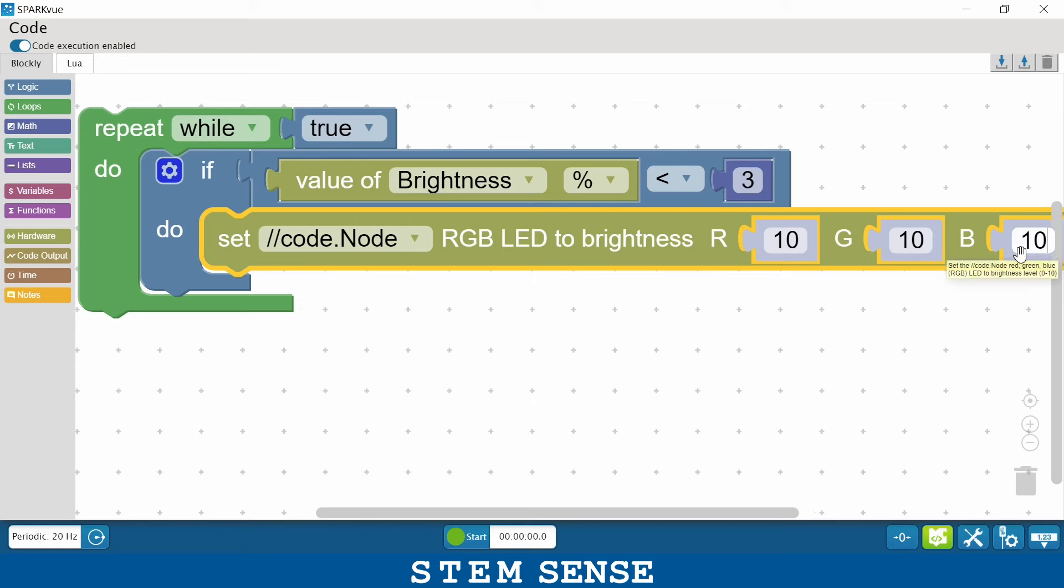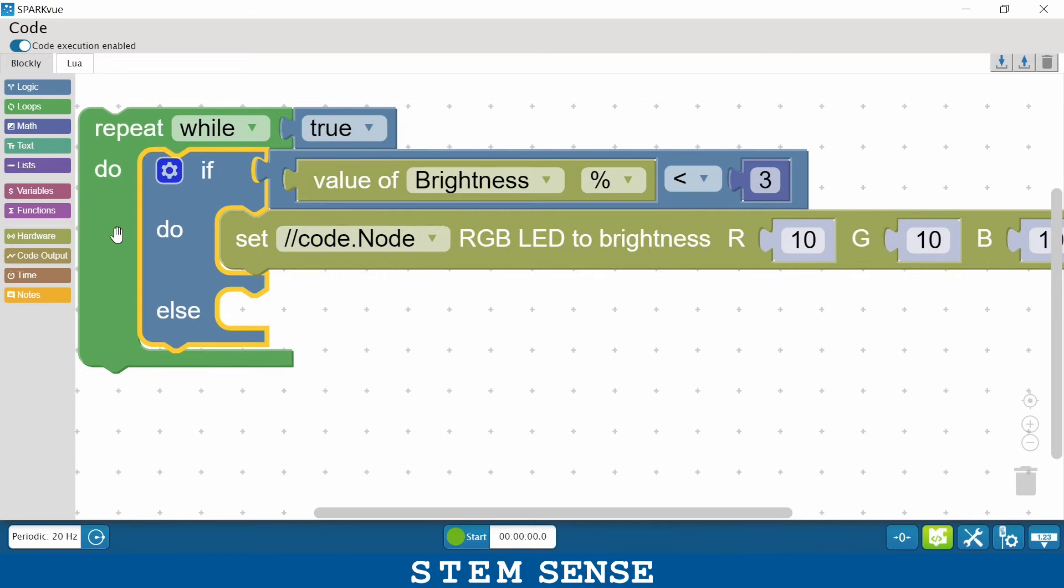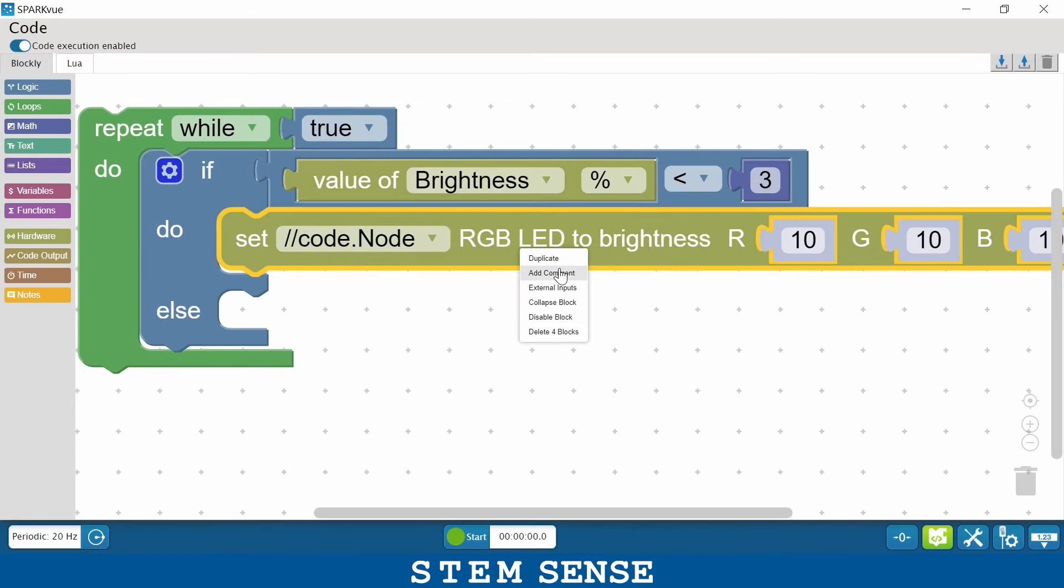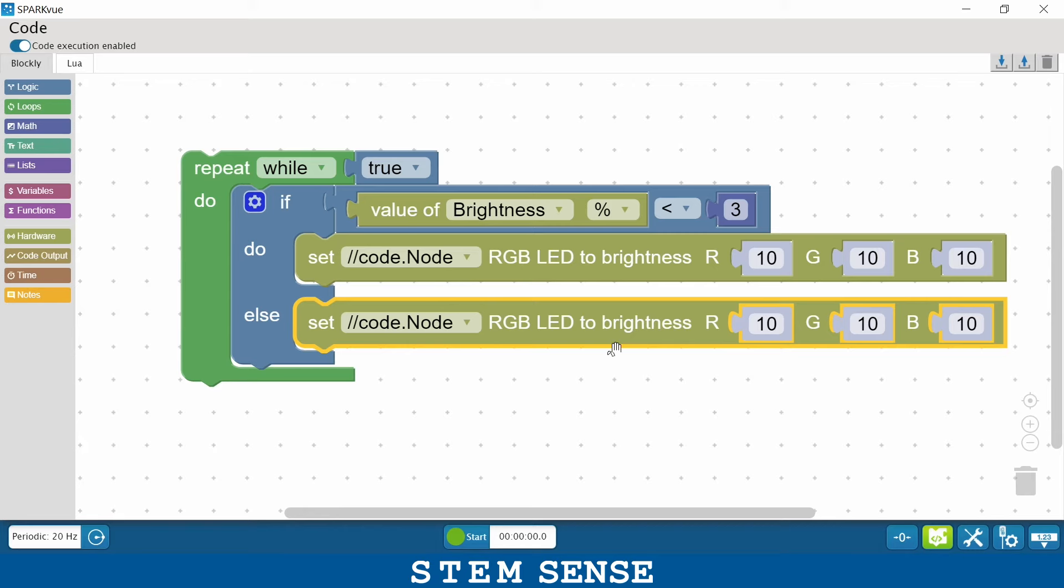Set that up. Now I also have to add an else statement. You can bring another block over or right-click to duplicate. And if the brightness isn't less than 3 percent, I want these lights to be off.